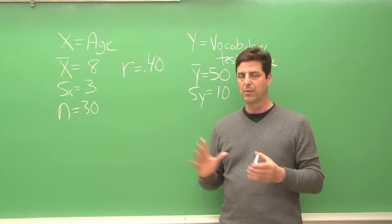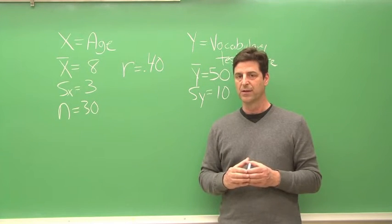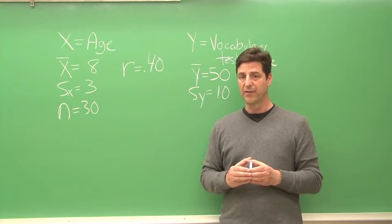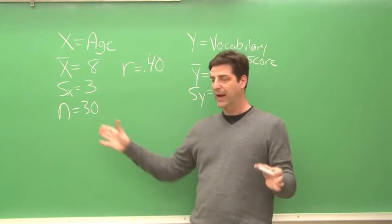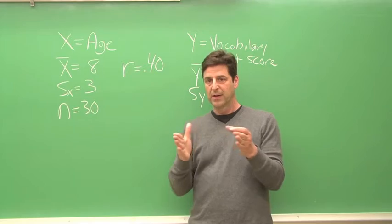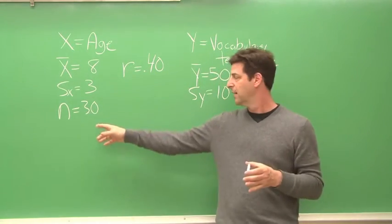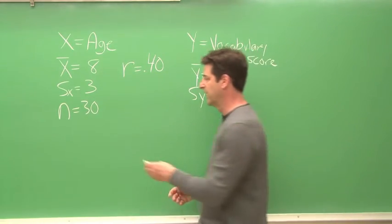Correlation tests are always two-tailed. So let's use an alpha level of .05. And the degrees of freedom for a correlation is the number of pairs of scores, so that would be the number of cases, minus two.